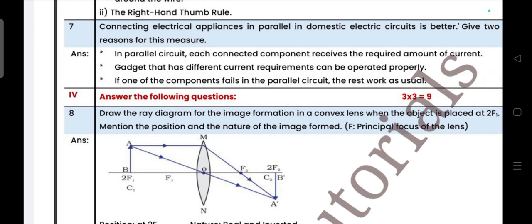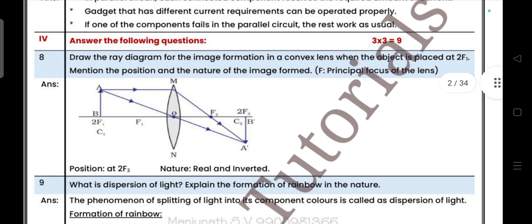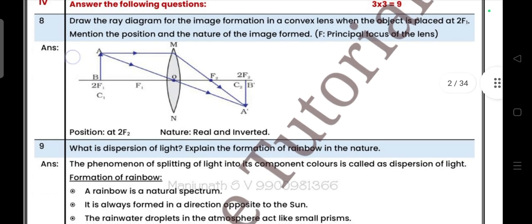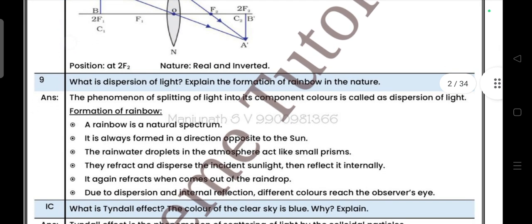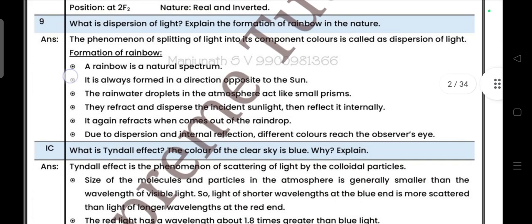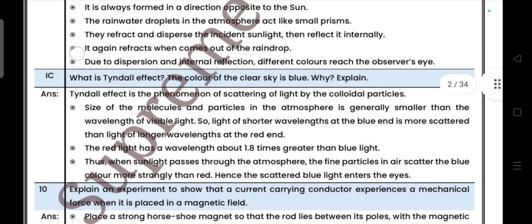Fourth main: draw a ray diagram of the image formation of the convex lens when the object is placed at 2F, mention the position and nature of the image. This carries three marks. Question number 9: what is dispersion of light? Explain the formation of rainbow in the nature.